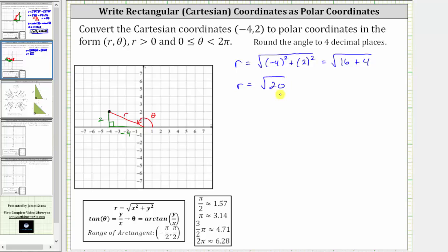We have r is equal to the square root of 20. The square root of 20 will simplify if 20 contains any perfect square factors, and since 20 is equal to four times five, where four is a perfect square, this will simplify. Since 20 is equal to four times five, the square root of 20 is equal to the square root of four times the square root of five, and since the square root of four is equal to two, the simplified form of r is r equals two square root five.